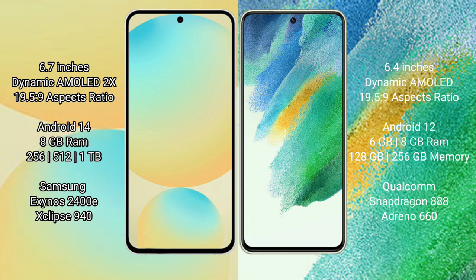The Samsung Galaxy S24 Ultra comes with 8GB RAM and 128GB, 256GB, or 512GB internal storage, powered by the Samsung Exynos 2400 processor with GPU 940.